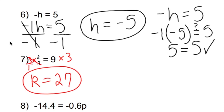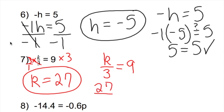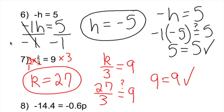On the right side, 9 times 3 is 27. Let's make sure it's right. Our original problem was k divided by 3 equals 9, and we said k equals 27. Is 27 divided by 3 equal to 9? Yes it is — 9 equals 9, and we are correct.